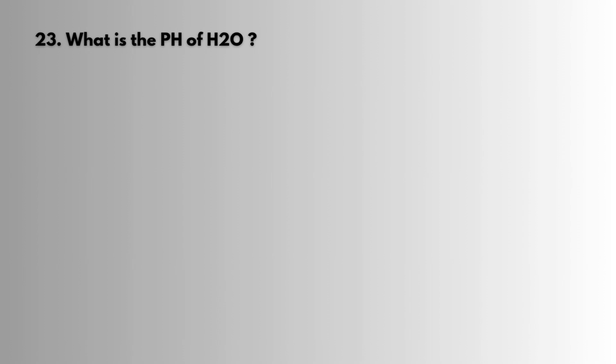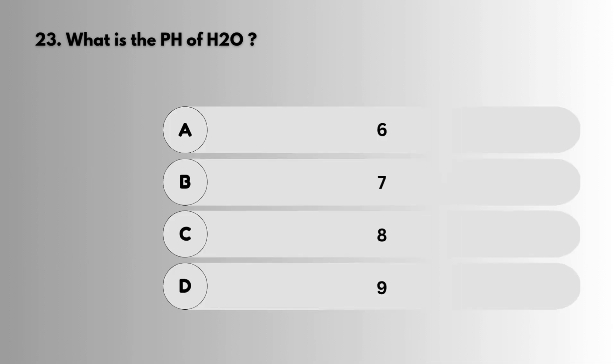Question 23: What is the pH of H2O? Answer: 7.